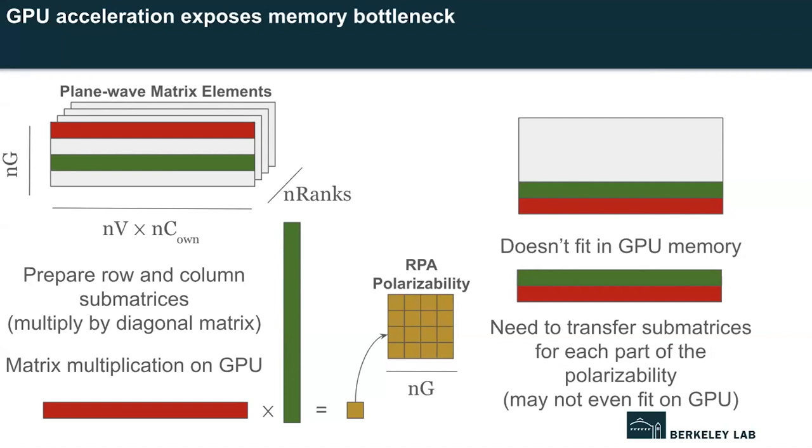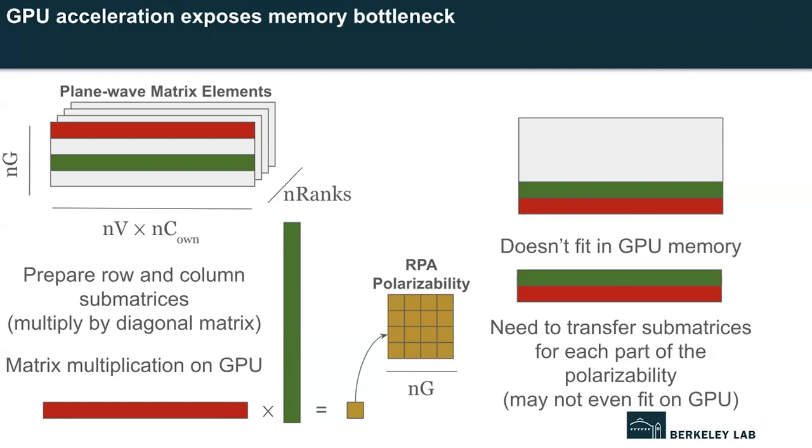A key complication is that this plane wave matrix is far too large to fit on a single node, so we distribute it across many MPI ranks by dividing up the conduction states — each rank owns all of the valence states but paired only with some of the conduction states. We also need to redistribute the output RPA polarizability matrix across a grid of, say, 4×4 MPI ranks. Each rank pulls out a row and column submatrix corresponding to a piece of the RPA polarizability, does some preparation — basically multiplying by a diagonal matrix — then performs that row-column piece of the matrix multiplication, followed by communication so each rank ends up with its correct segment of the RPA polarizability.